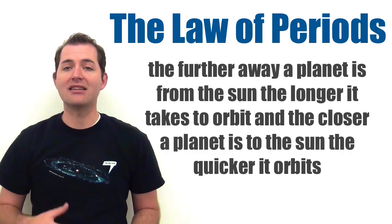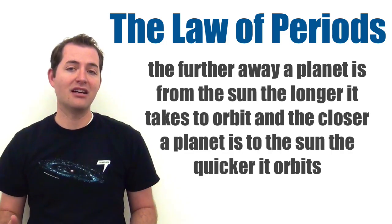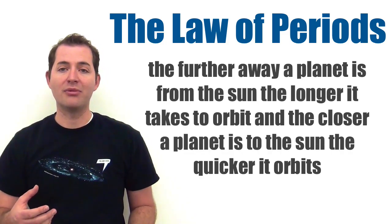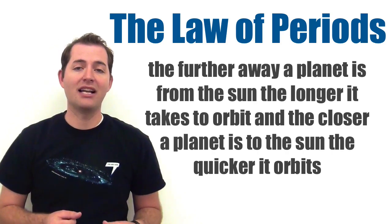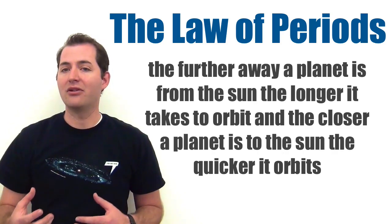What this basically means is that the further away a planet is from the sun, the longer it takes to orbit, and the closer a planet is to the sun, the quicker it orbits.